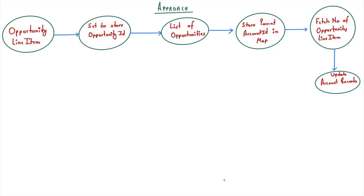Let's talk about the approach we are going to use. Account and Opportunity Line Item are not directly linked, but we can connect these two objects via the Opportunity object. In the first step, we will use Opportunity Line Item to fetch the Opportunity ID and store that ID in a set. After that, we will fetch Opportunity data like Account ID using that set in a SOQL query and store Account ID in a map. Finally, we will fetch the count of Opportunity Line Item records using an aggregate function and update the Account custom field.